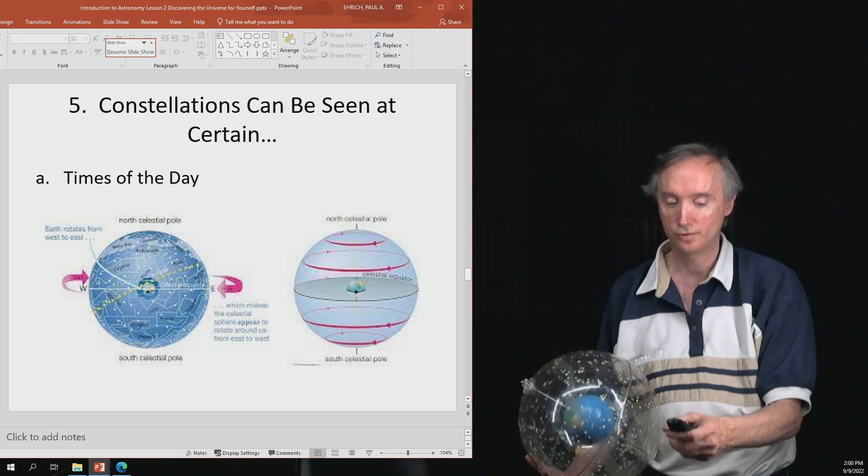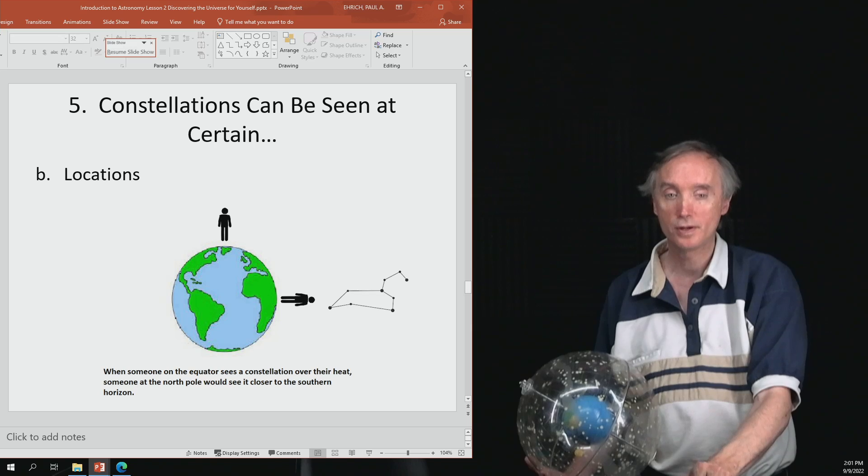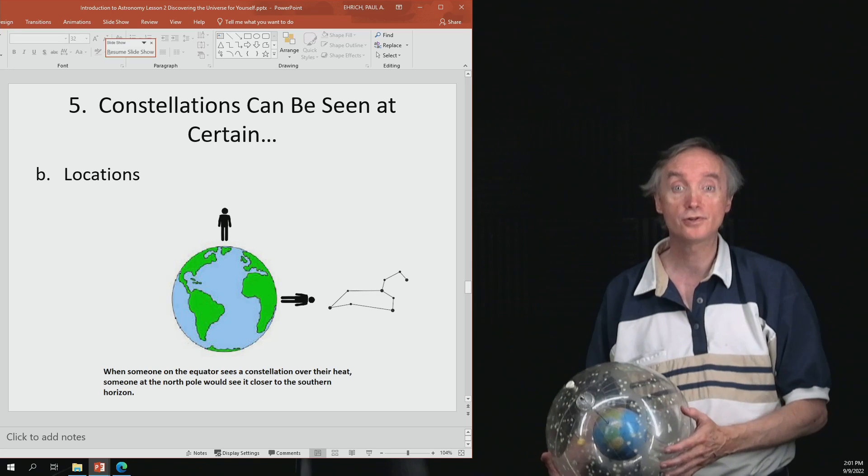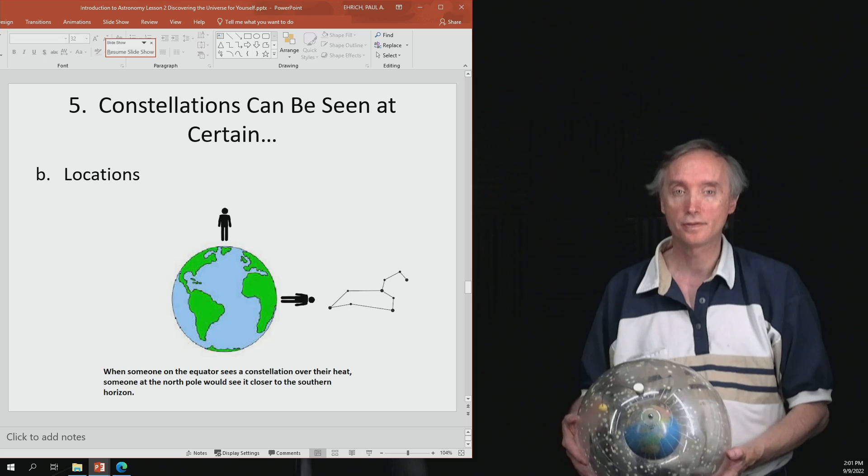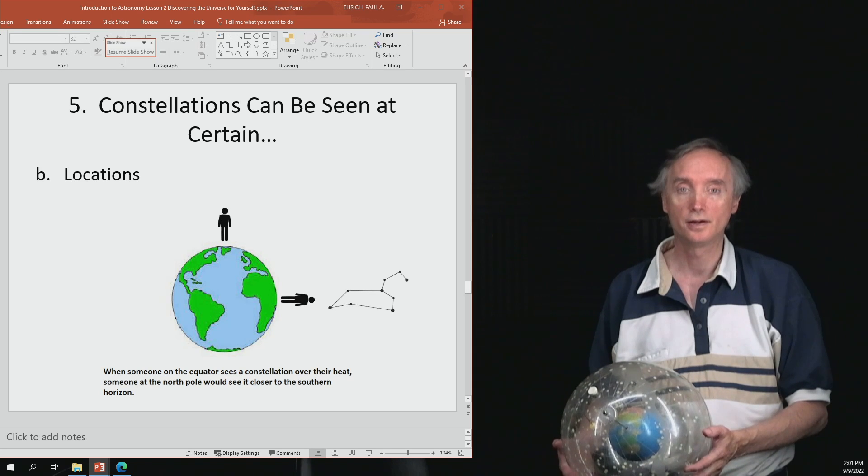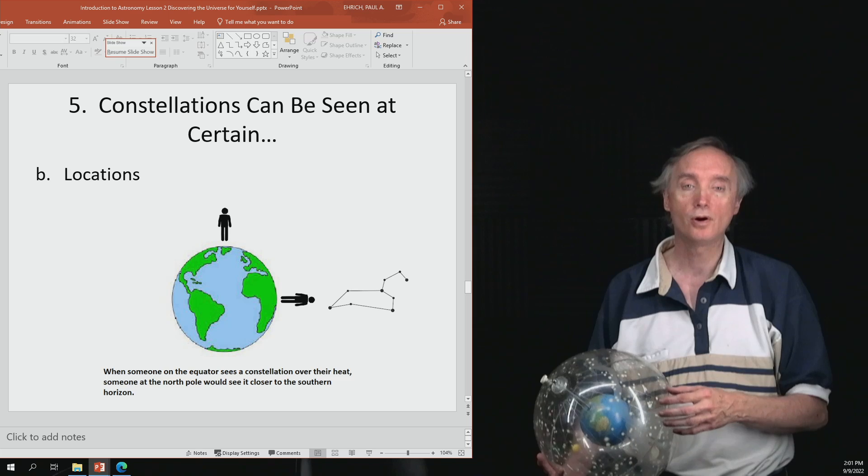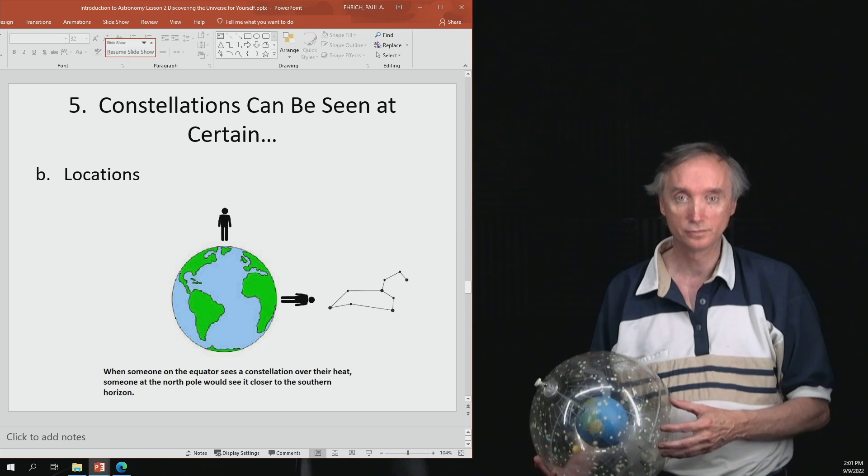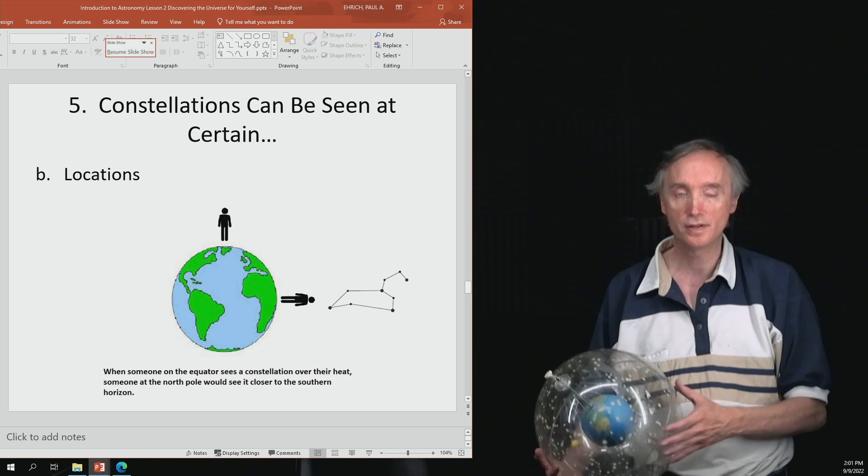Okay, let's go on to another one here. It also depends on your location. So here we've got two people that are looking at this particular constellation. If you are on the equator and you look straight over your head, you're going to see that constellation.